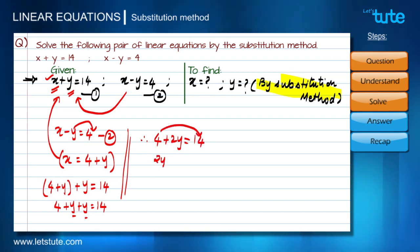Therefore 2y=14-4 is 10, so 2y=10. Therefore we get y as 5. Here we get the value for y.